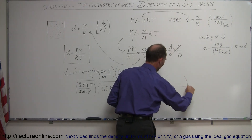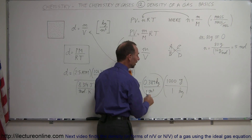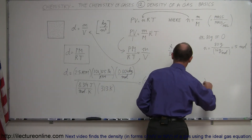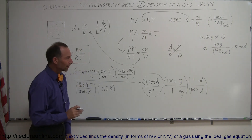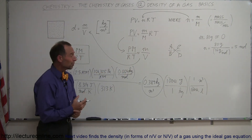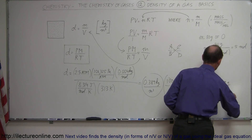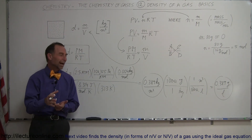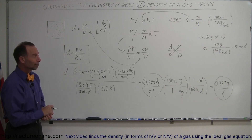To convert from kilograms to grams: 1 kilogram equals 1,000 grams, so moving the decimal three places converts kilograms to grams. To convert from cubic meters to liters: 1 cubic meter equals 1,000 liters. Dividing by 1,000 for the volume conversion and multiplying by 1,000 for the mass conversion cancels out, meaning kilograms per cubic meter is numerically the same as grams per liter. So the density is also 0.389 grams per liter.